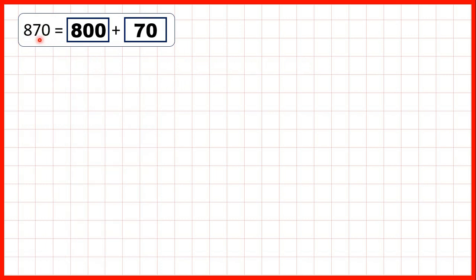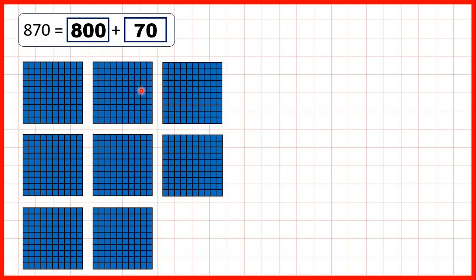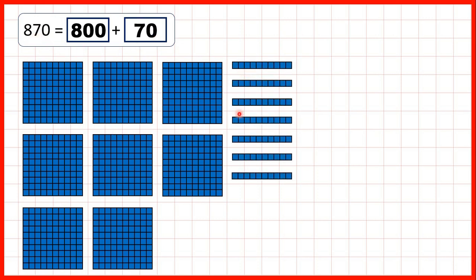Then our last number was 870. For 800, we can show 800s blocks. For 7 tens, or 70, we can show 7 tens blocks. But then we don't need to show any ones, which is why when we partitioned, we didn't need to write anything for the zero.